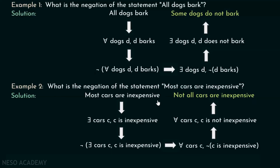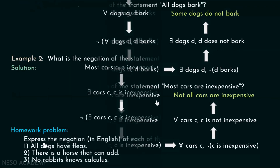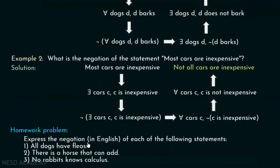Here is a homework problem for you. Express the negation in English of each of the following statements: (1) All dogs have fleas. (2) There is a horse that can add. (3) No rabbits know calculus. You can post your answers in the comment section below.